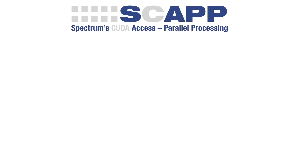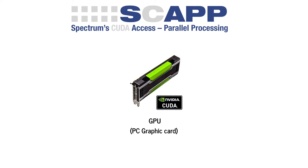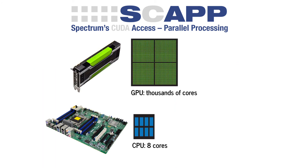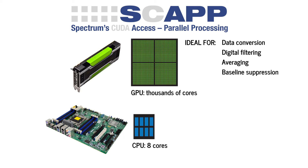SCAP — a new approach from Spectrum. The Spectrum SCAP approach uses a standard off-the-shelf GPU (Graphics Processing Unit) based on NVIDIA's CUDA standard. The GPU connects directly with the digitizer with no CPU interaction. This opens up the huge parallel core architecture of the GPU for signal processing. The structure of the CUDA card works perfectly for analysis, as it is designed for parallel data processing, making it ideal for tasks such as data conversion, digital filtering, averaging, baseline suppression, FFT window functions, and FFTs themselves.